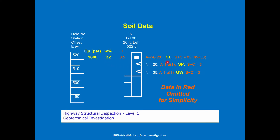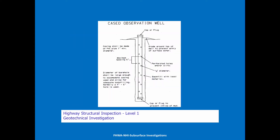Here we have a sand that is poorly graded and a G that is well graded. The N value here is 35, and the N value here is 20. A cased observation well is what we use to know where the water level is. When they drill down for refusal on auger drilling, they'll install one of these observation wells, then measure where the water table is and check it over time to see how it fluctuates. The contractor needs to know this to determine if they need a cofferdam or extra shoring.